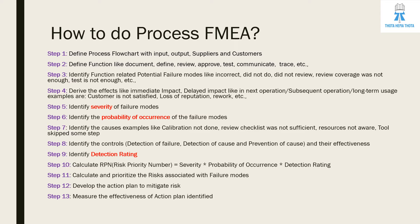A function is essentially a verb or action within the process. Step three is to identify function-related potential failure modes. For example: incorrect documentation, not performing testing, not conducting reviews, not approving, not communicating results, insufficient review coverage, insufficient data, or insufficient testing.